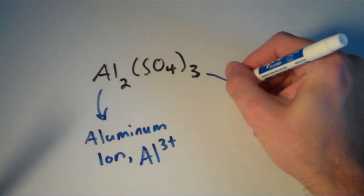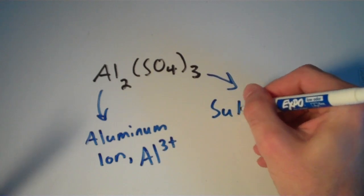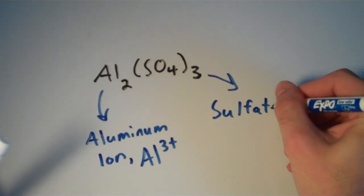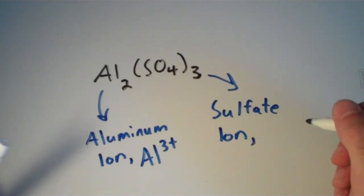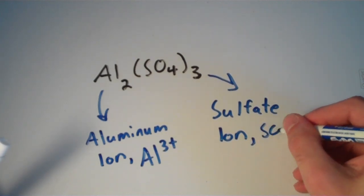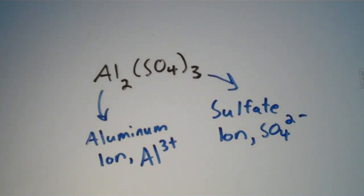Our anion, this is a polyatomic ion called the sulfate ion. And the formula for the sulfate ion is SO4 2-. And there's really no trick to figuring that out. This is just one of those things that you've got to memorize. So the sulfate ion has the formula SO4 with a 2- charge.